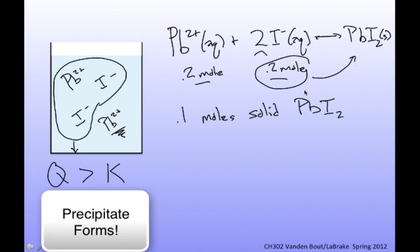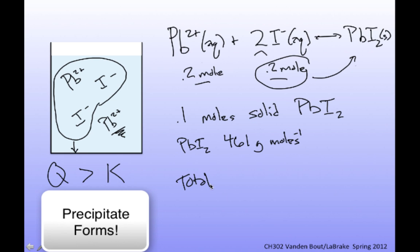This assumes the reaction goes to completion and that all of the I⁻ reacts, which is a reasonable assumption because lead iodide is not very soluble, so we form as much solid as possible. From 0.1 moles of solid PbI₂, and since lead iodide has a formula mass of 461 grams per mole, the total precipitate will be 46.1 grams of lead iodide.